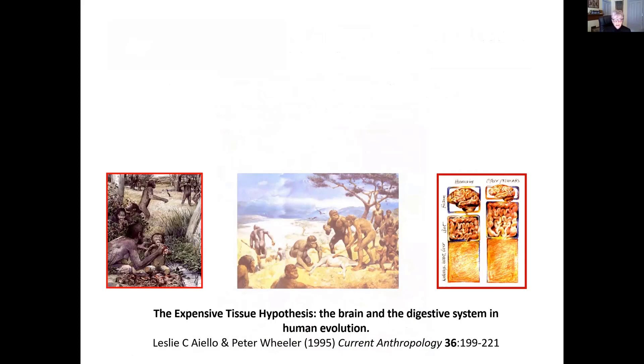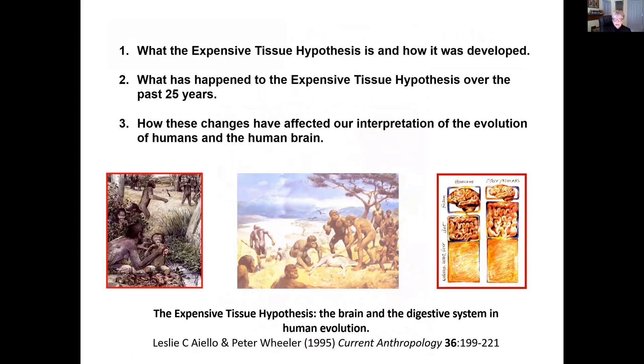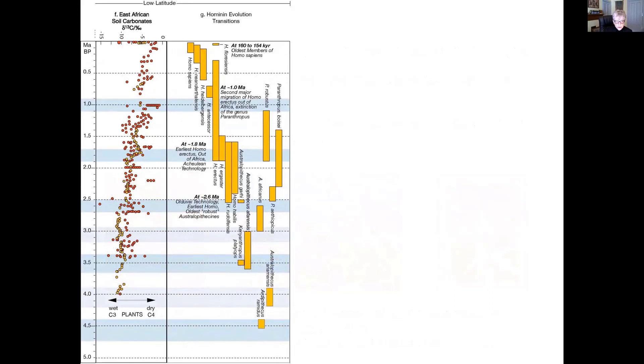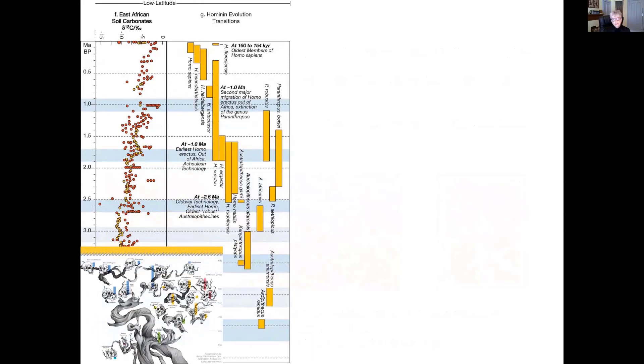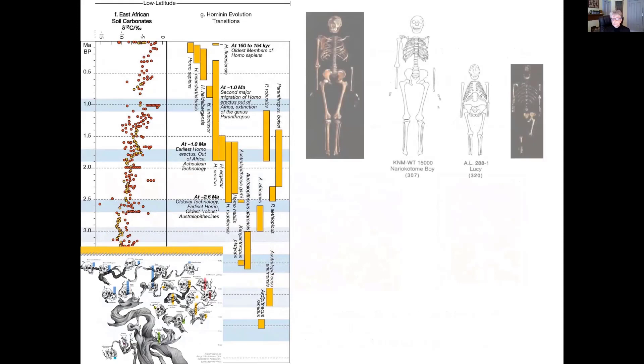He was, at that point, one of the world's leading authorities on the evolution of the hominid postcrania. And you see him here with pictures of his analysis of the Laetoli footprints, where he demonstrated that they had a human-like bipedal gait. Now, today, what I want to talk to you about is the expensive tissue hypothesis. It's now been 25 years since Peter Wheeler and I developed the hypothesis.